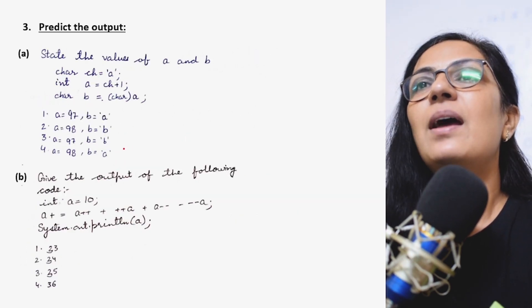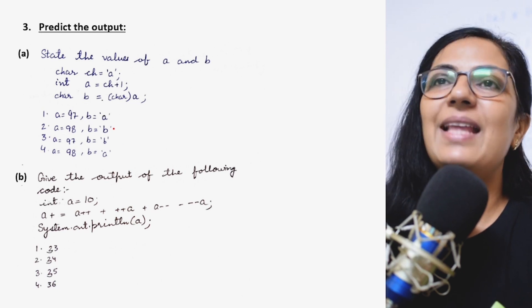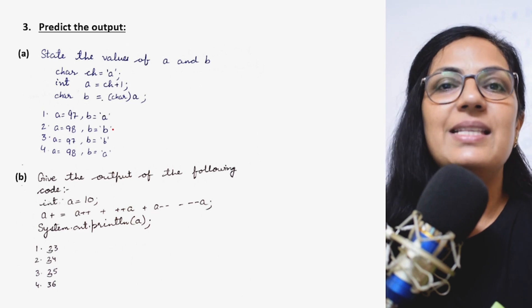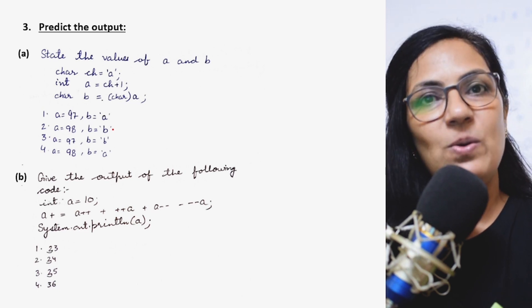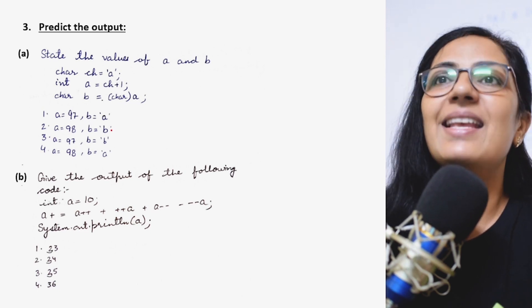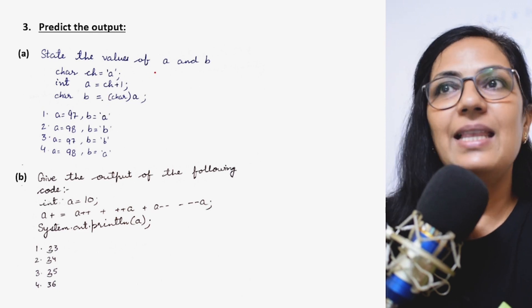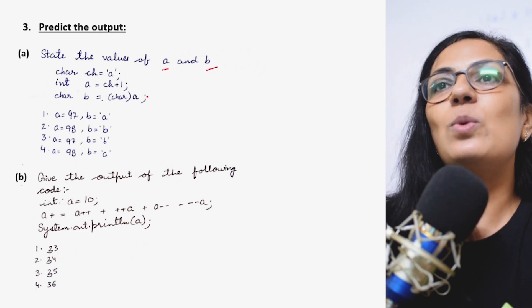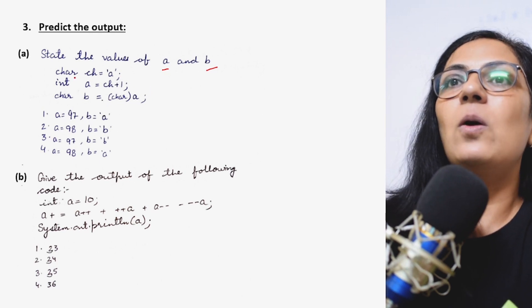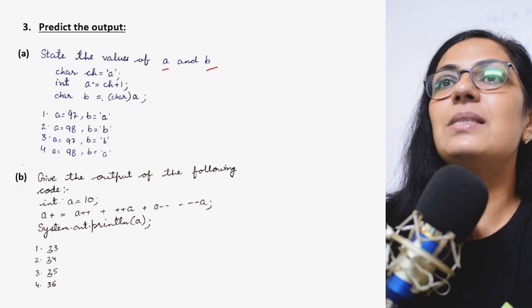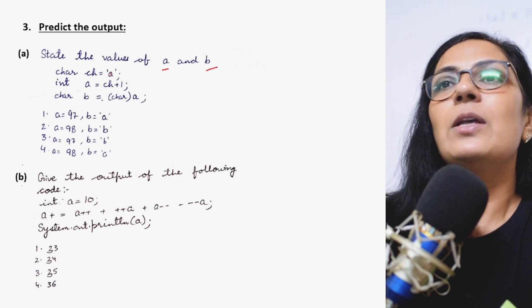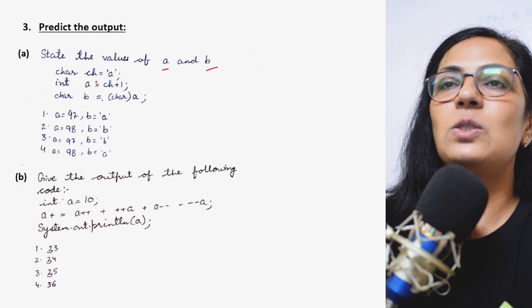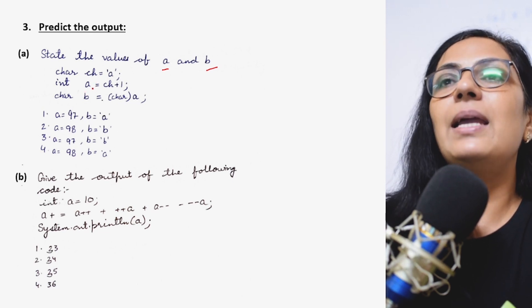Now we move on to the third question that is predict the output. Always I tell you to learn the ASCII codes of uppercase and lowercase letters and the digits. The question says state the values of a and b. Here a and b are the variable names. Now ch is a character type variable in which a is stored. One lowercase letter a is stored in variable ch.